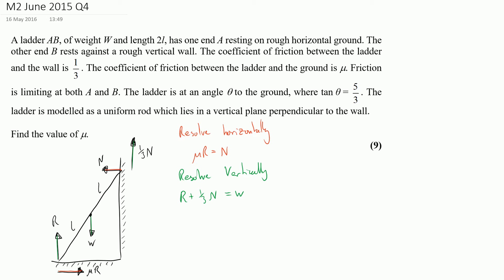I've increased my number of equations but also my number of unknowns. However, I notice I can substitute my first equation into my second equation and end up with R plus one third of μR is equal to W. At this point it might not be useful, but if I've got the option I'm always going to look to reduce the number of unknowns in my equation.